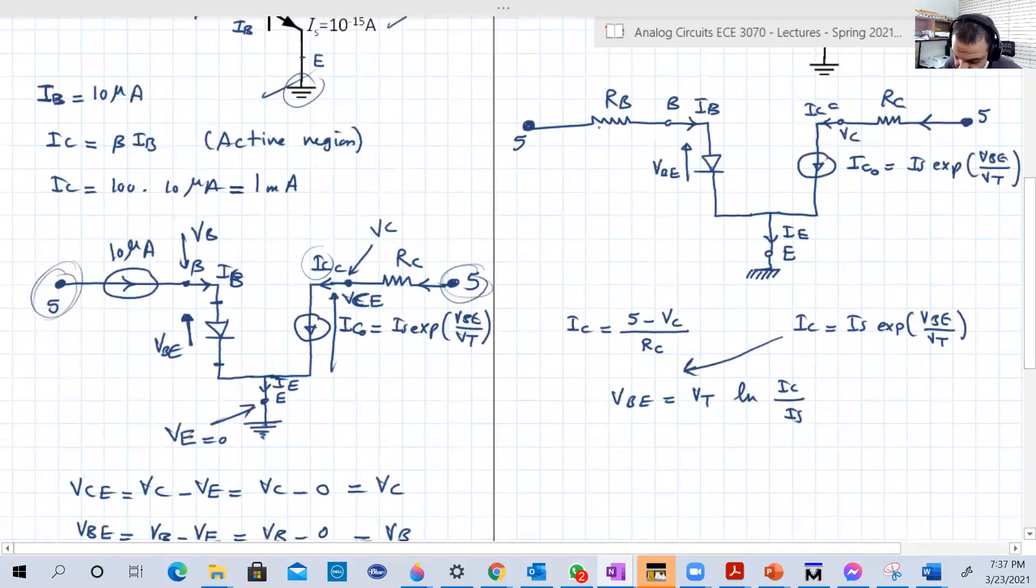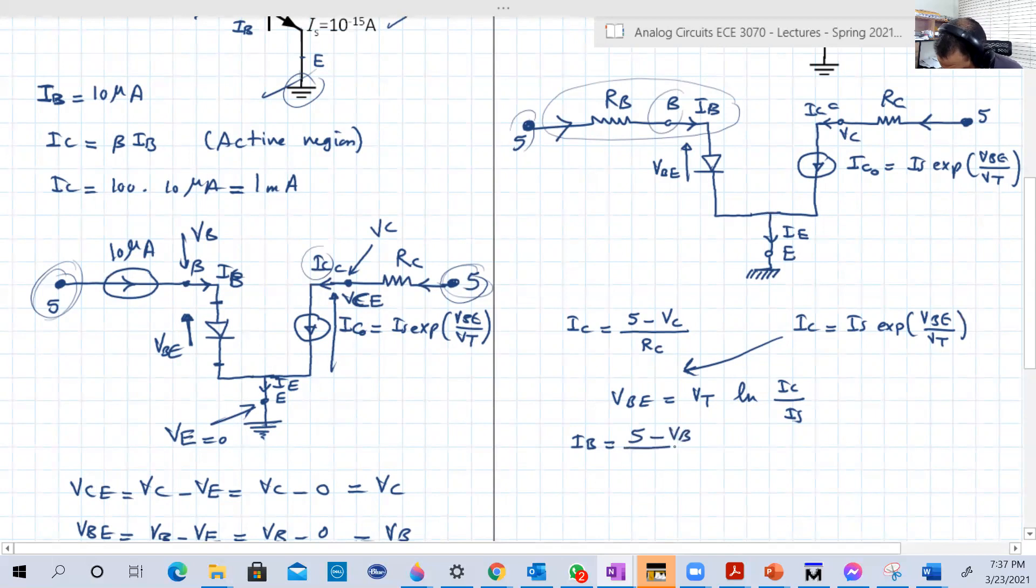So what we only need to do is to write the equations. We know that IC, which is flowing in that branch, equal to 5 minus VC, this is VC, over RC. We know that IC is equal to IS exponential VBE over VT. So from that we can say that VBE is equal to VT ln IC over IS. How about IB? We know that from here IB is equal to 5, flowing in that branch, so it's equal to this node minus this node over RB, 5 minus VBE over RB.